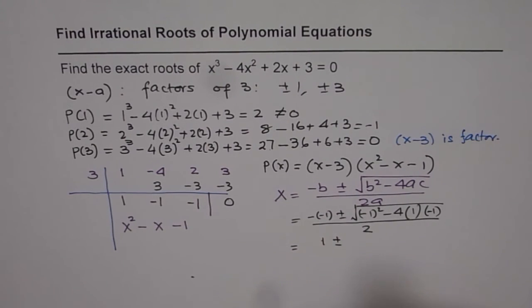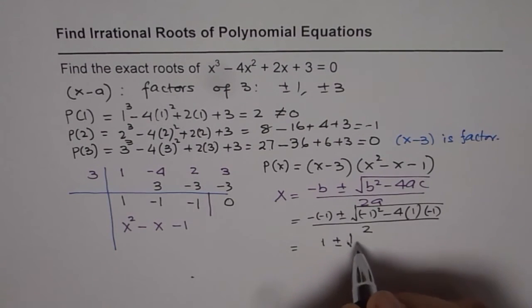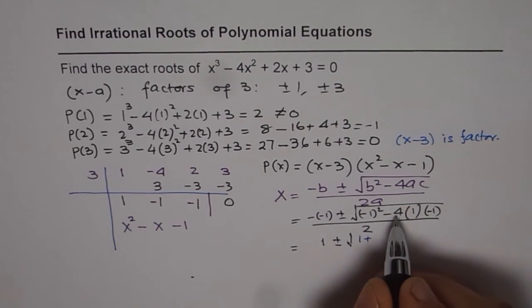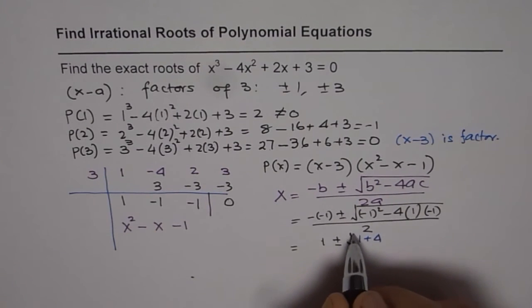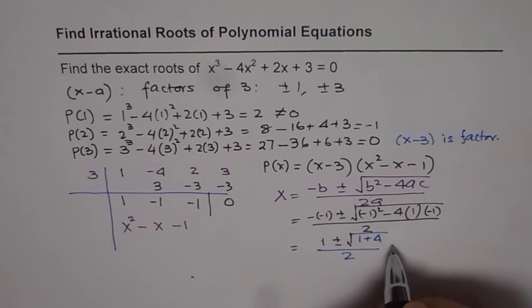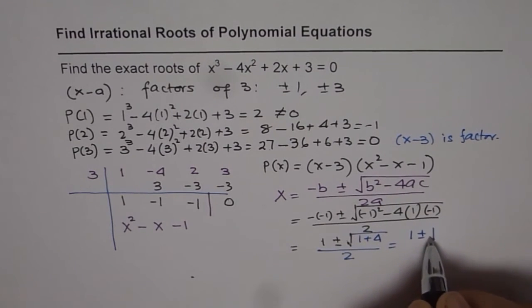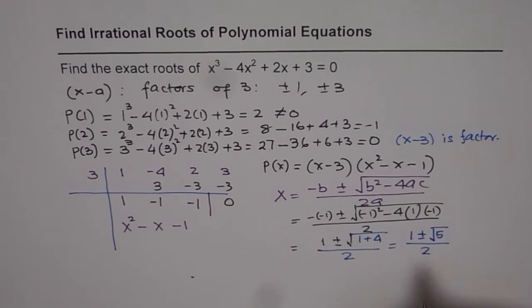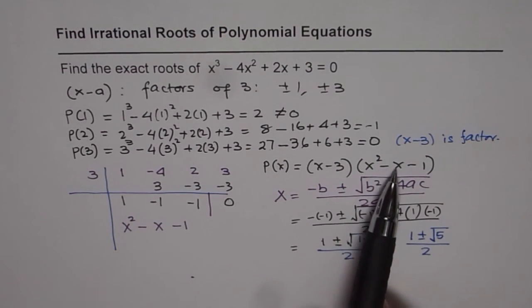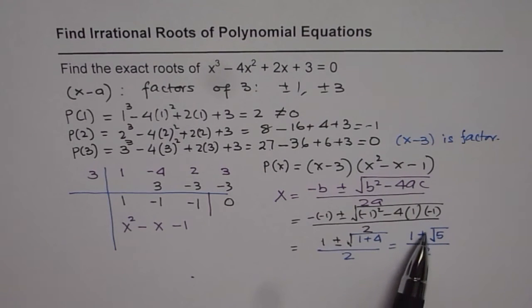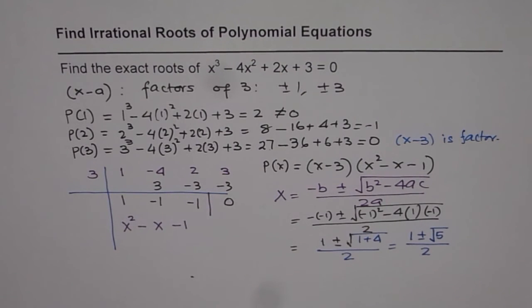So here we get 1 ± √(1 + 4) over 2. Within the square root, we have 1 plus 4. 4 times minus and minus becomes plus, so that gives us (1 ± √5) / 2. We will leave it as such since we are looking for exact roots. So that becomes the roots of x² - x - 1. There are 2 conjugate pairs.